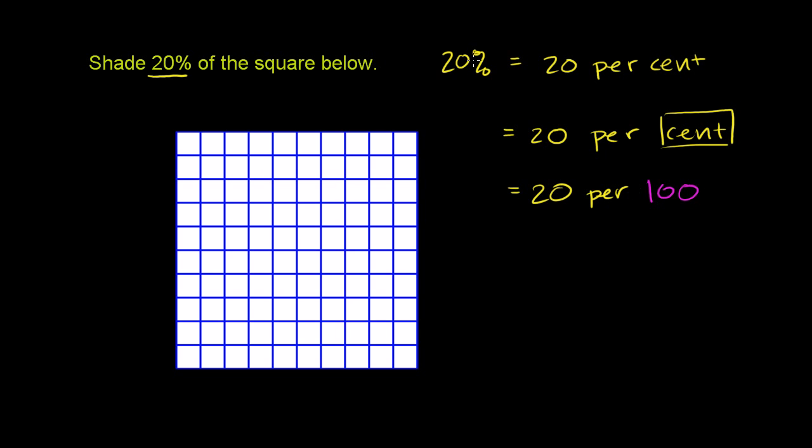20 per cent means if we want to shade 20%, and we break up the square into 100 pieces, we want to shade 20 of them. 20 per hundred.